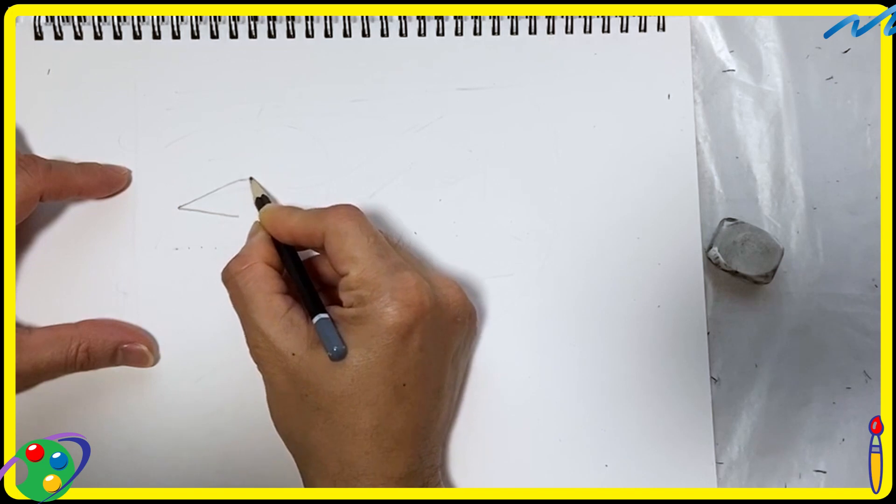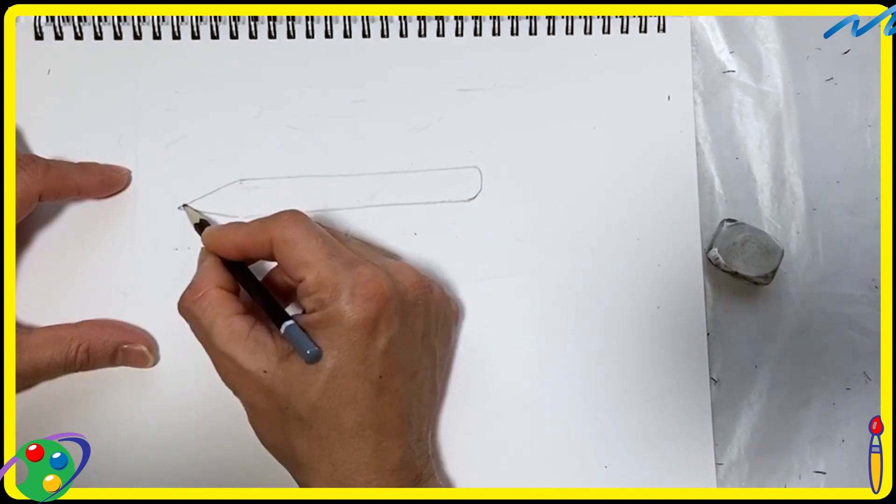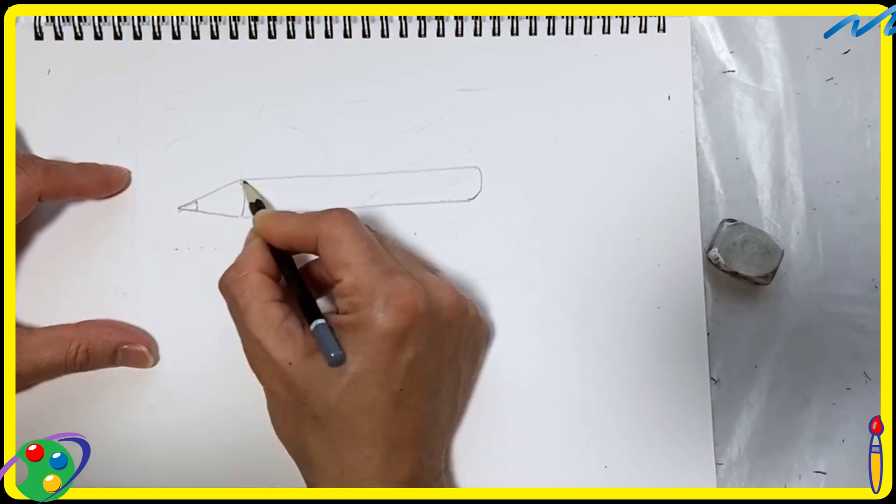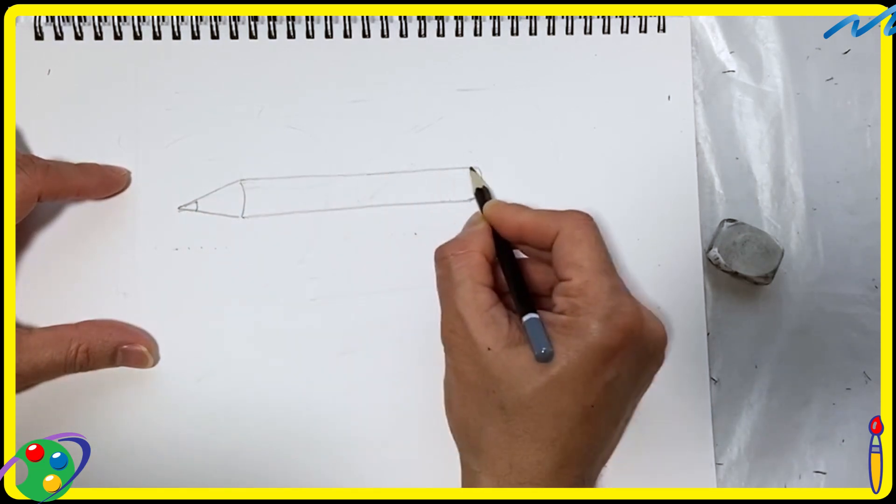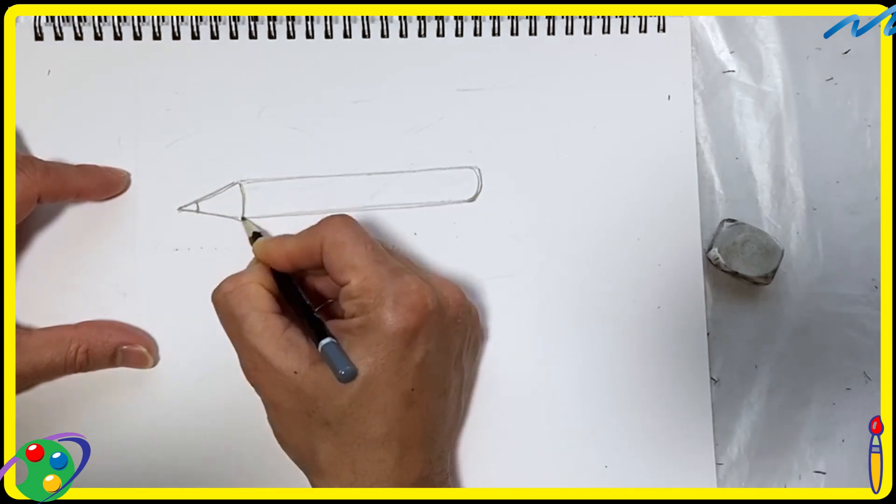So let's see another example of what can be done with lines. Here we are drawing a pencil. Now, this is, in the beginning, a contour of the pencil. Now after this we are adding a few lines.